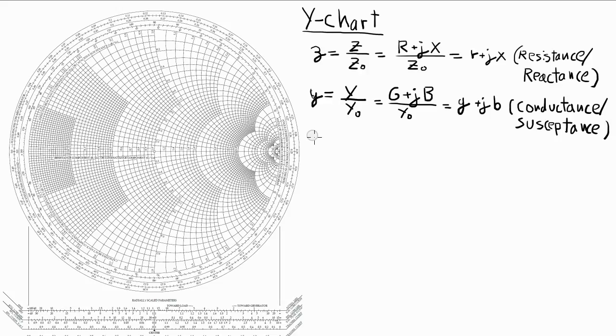Now we know that the admittance is equal to the inverse of the impedance, which means that little y is equal to 1 over little z, and y0 is equal to 1 over z0.